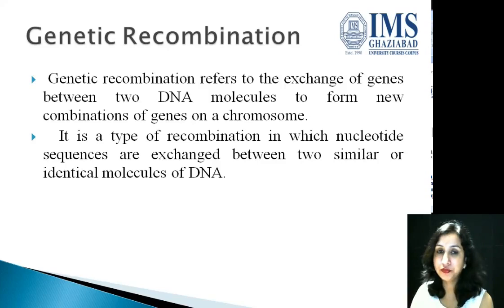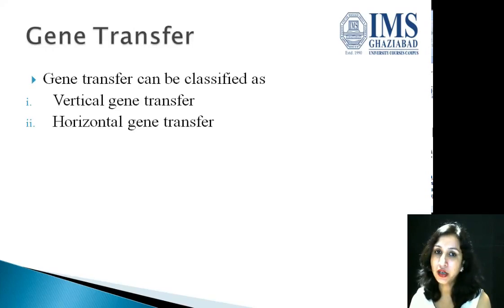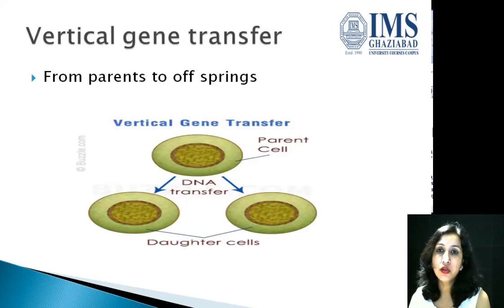There are two modes for transferring DNA: one is vertical gene transfer and another one is horizontal gene transfer. In vertical gene transfer, the genetic information is transferred from parents to offspring — DNA is transferred from the parent cell to the two daughter cells.